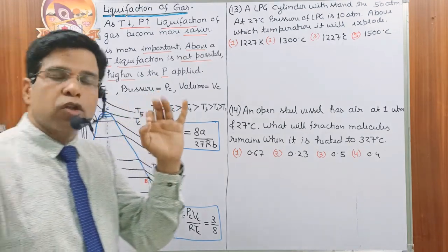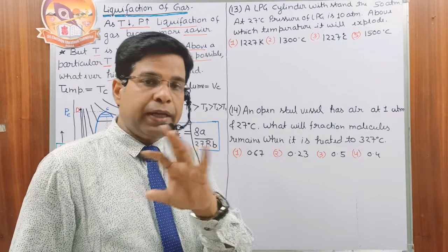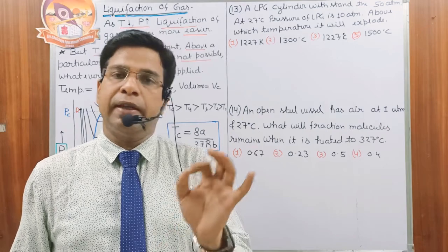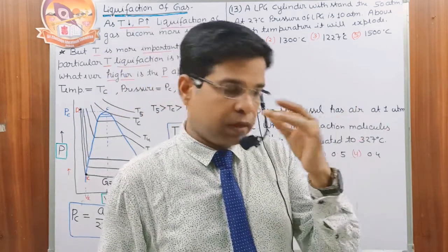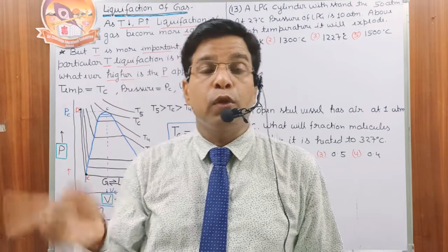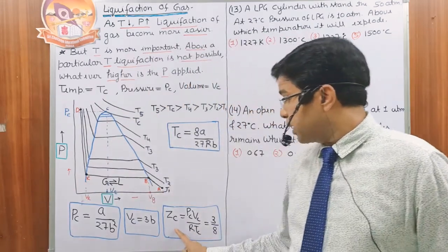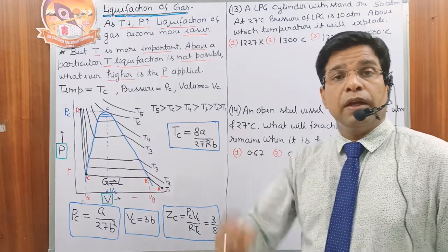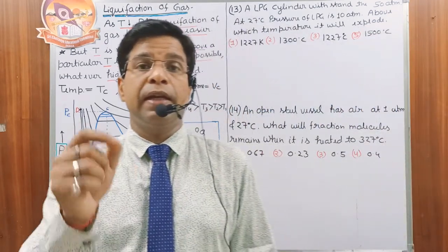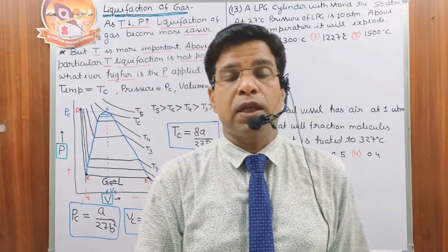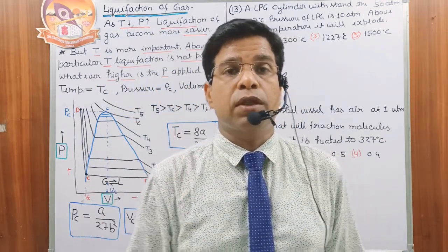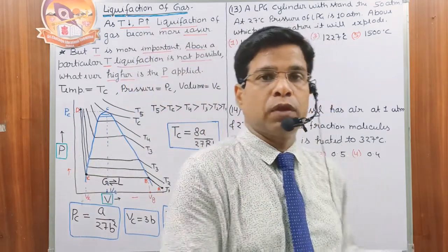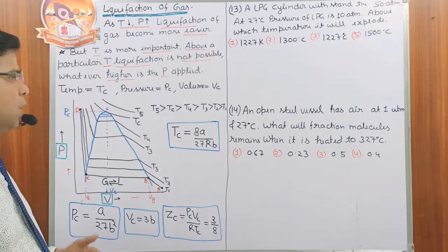If a and b values are given and you need to check whether a gas follows the Van der Waals equation, calculate the compressibility factor at the critical point. If this value comes out to 3/8, the gas follows the Van der Waals equation. If it is not equal to 3/8, the gas does not follow the Van der Waals equation.